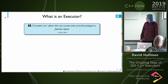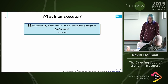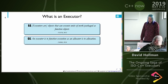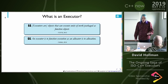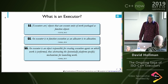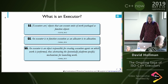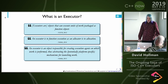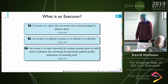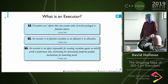Several papers have described executors over the years. One definition: executors are objects that can execute units of work packaged as function objects. Another: an executor is to function execution as an allocator is to allocation. A third: an executor is an object responsible for creating execution agents on which work is performed and abstracting the mechanisms for launching work. These were three early papers on executors.